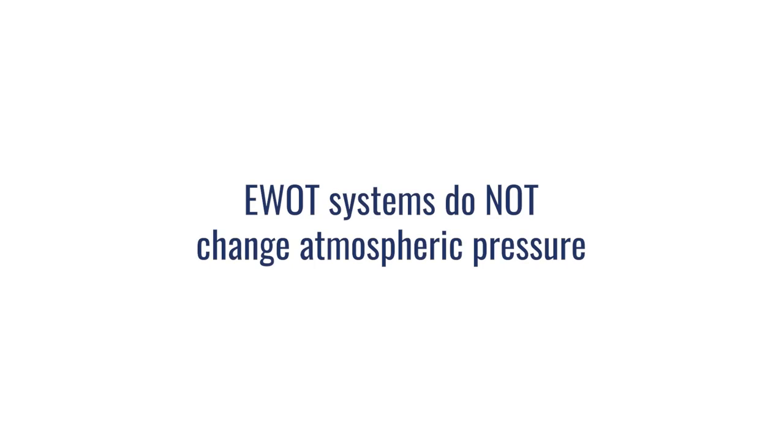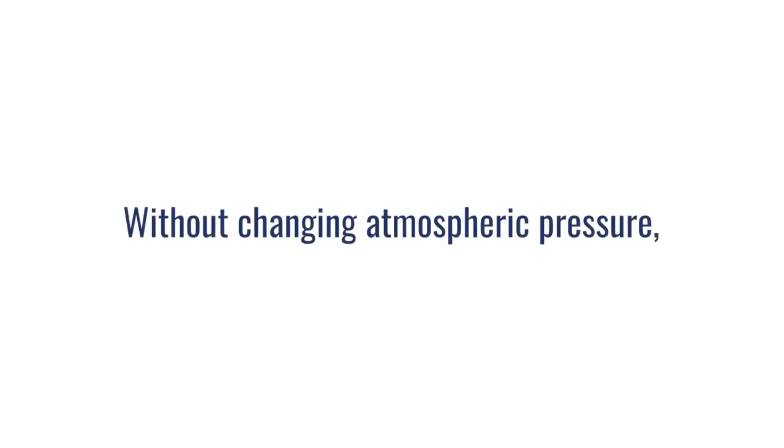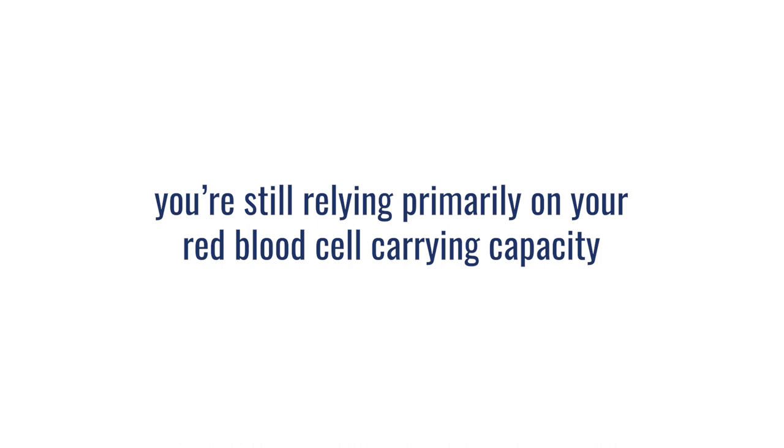So where are some of the differences? Number one: you're not changing atmospheric pressure with an EWOT system. If you're at sea level, you're at 14.7 PSI. While you're doing EWOT, you're still at 14.7 PSI. As long as you're not changing atmospheric pressure, you are still relying primarily on your red blood cell carrying capacity. Yes, you're delivering more oxygen to the tissue and extracting more oxygen from the air you're breathing. However, you are still limited on how much oxygen you can dissolve into your system because you're limited by red blood cell carrying capacity. You may increase plasma levels slightly due to the demand you're creating, but still the overwhelming majority of oxygen you're extracting is going to be carried by red blood cells.